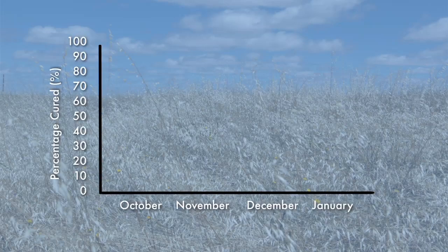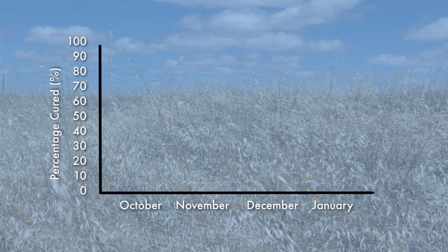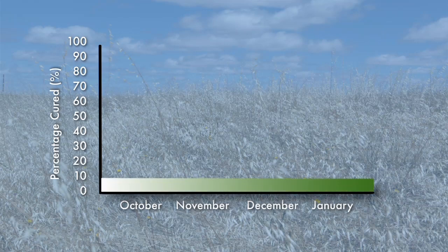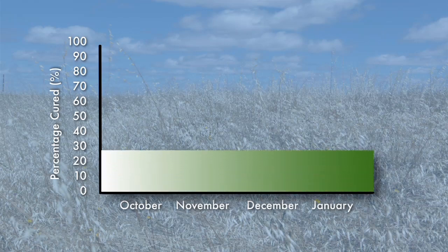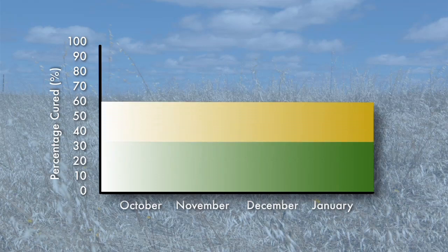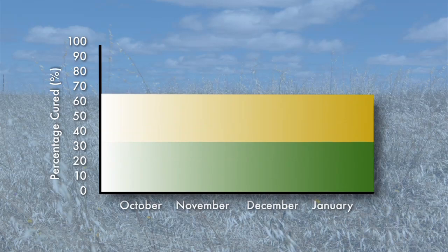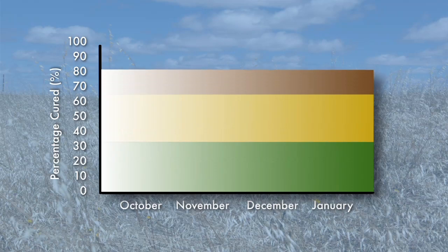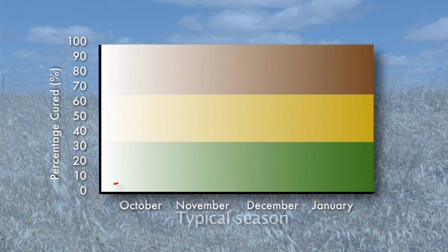This graph shows the three basic stages of grassland curing in the field. From zero to thirty percent cured the grass is basically green — we call this the green phase. From forty to sixty percent cured the grass is mostly yellow — we call this the yellow phase. And from seventy to a hundred percent cured the grass is yellow and very dry — we call this the dry phase.